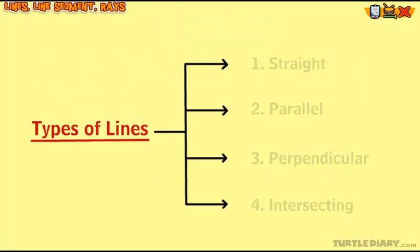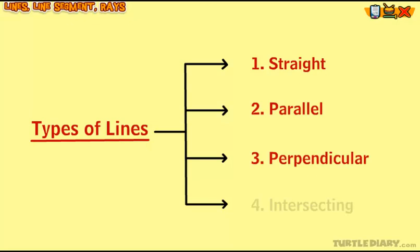Types of lines: There are different types of lines. Lines can be straight, parallel, perpendicular, or intersecting.